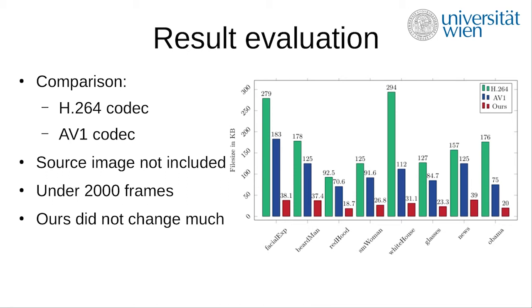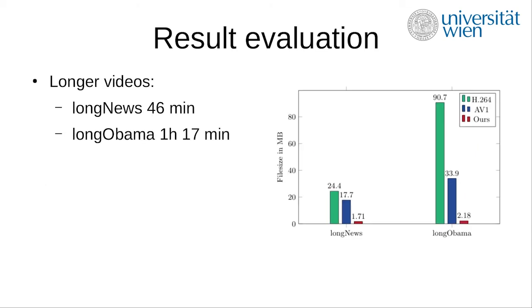Each of the videos were under 2000 frames long and had different types of settings — some focused on facial expressions and others were zooming in on the person. Notably, our compression didn't change much in file size regardless of the original video file. We also experimented on longer videos with more frames, which were looped versions of the shorter ones, and our results performed even better in that regard.